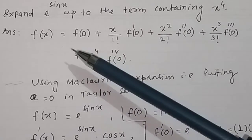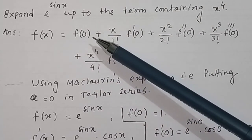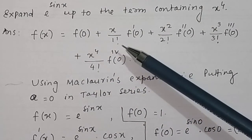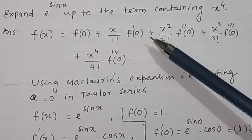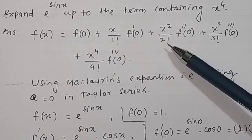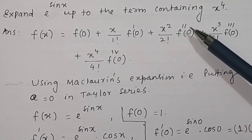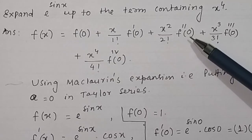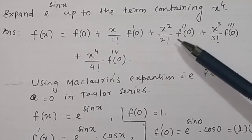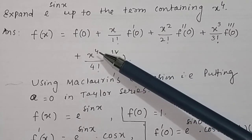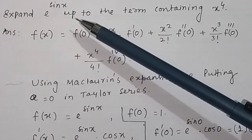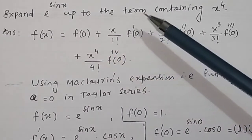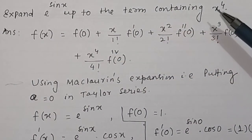In Maclaurin series, f(x) is equal to f(0) plus x divided by factorial 1 times the first derivative of the function at a equal to 0, then x squared divided by factorial 2 times the second derivative at x equal to 0. We will take up to the x to the power 4th term, because it is given to expand e to the power sin x up to the term containing x to the power 4.